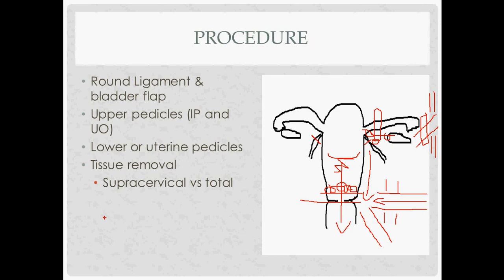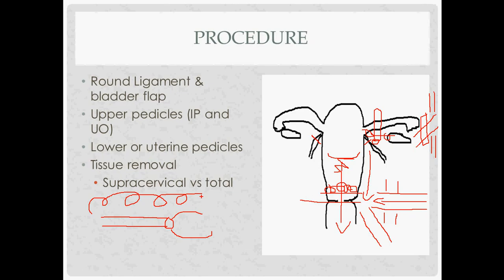The tissue is removed by morcellation — a special instrument inserted through the port that grabs the uterus and slowly cuts it in a spiral, like peeling an apple with an old-fashioned apple peeler. This produces strings of uterine tissue, and the goal is to get it all out in one continuous string.